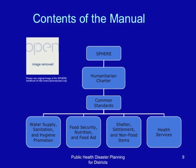Underneath this, the manual covers standards for water supply and sanitation, food security, nutrition and food aid, shelter and settlement management and non-food items, and the management of health services in disaster situations. These standards are mainly applicable for disasters that result in mass displacement of people, with people living in camps who need assistance in these various areas.